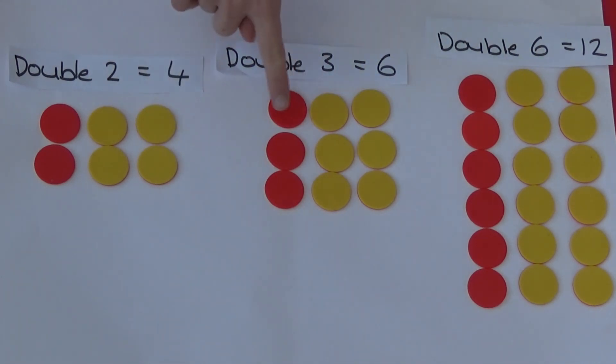Here, I've made three with the red counters and doubled it with the yellow counters. So, double three is six. And here, I've made six using the red counters and doubled it with the yellow counters. So, double six is twelve.